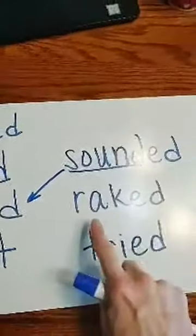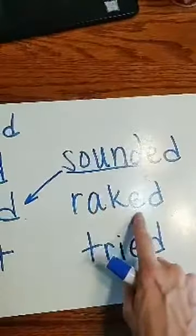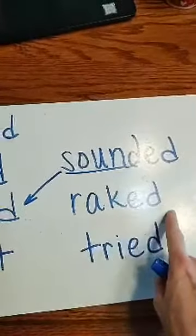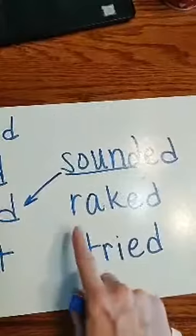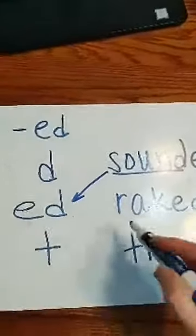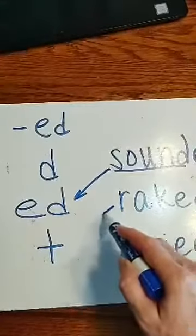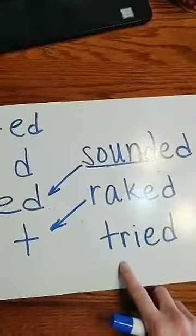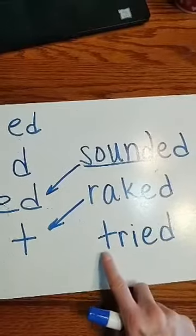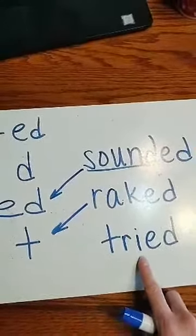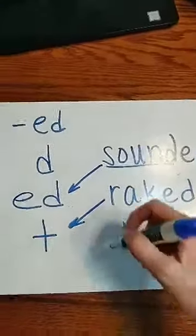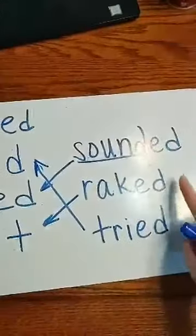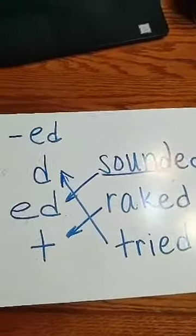Good. Let's try this one. Magic e there making this say its name. R-a-ke. Raked. You're right. We raked the yard. That has the t sound at the end. So this one must have the d sound. Let's try it. This is going to say its name. I. T-r-i-d. Tried. Good. There's a d sound on the end. So when we add that ed ending, it can make different sounds on the end.